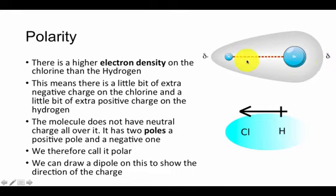So we've got two poles to the molecule. That's where the word 'polar' comes from. A polar molecule is one that does not have a charge that is the same across all of it. Now the fancy word for that is homogeneous—homogeneous means the same everywhere. The charge is not the same everywhere on this molecule. There's a little bit of positive charge here and there's a little bit of negative charge here.